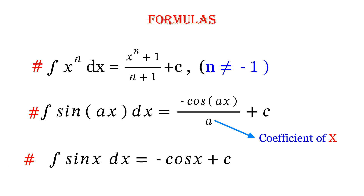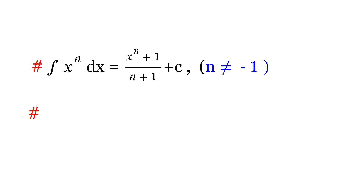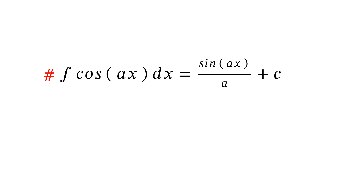The next integral is sine(x) dx equals minus cos(x) plus C. From the above formulae you can observe that a equals 1 here — if you place 1 in the position of a you can just get this formula. The next integral is cos(ax) dx equals sine(ax) divided by a plus C, and once again 'a' is the coefficient of x.